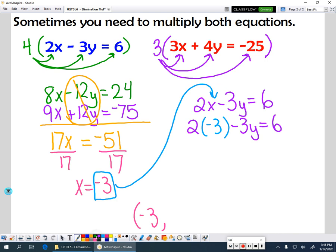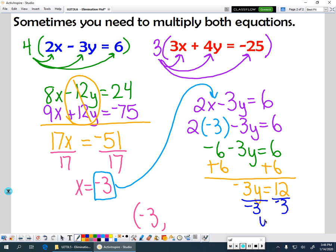And then we just have to solve. So 2 times negative 3 gives me negative 6. And then I have to push those 6's together. So I will add 6 on both sides here. And I get negative 3y equals 12. And I will finish up dividing both sides by negative 3. And I get y = -4.